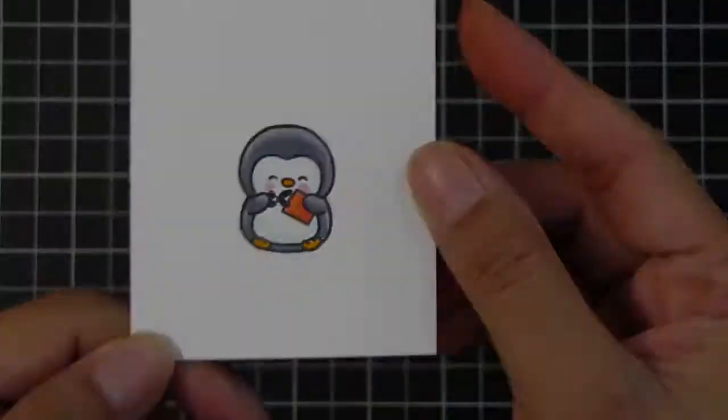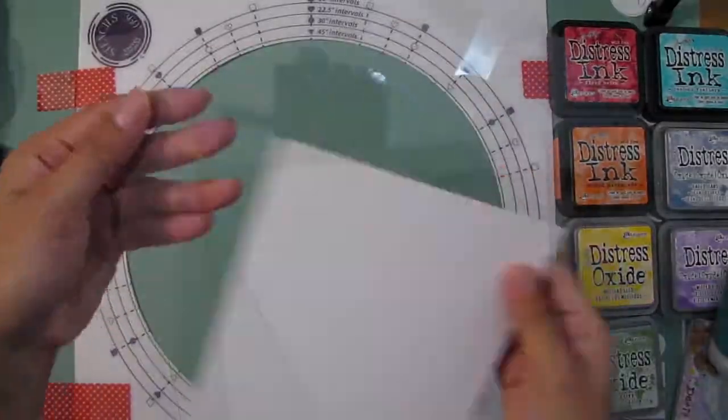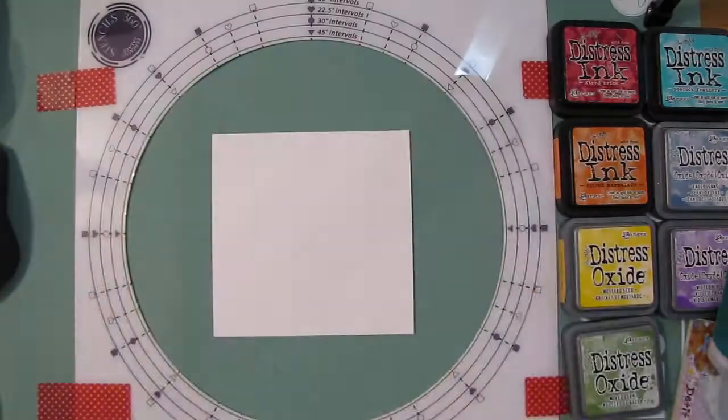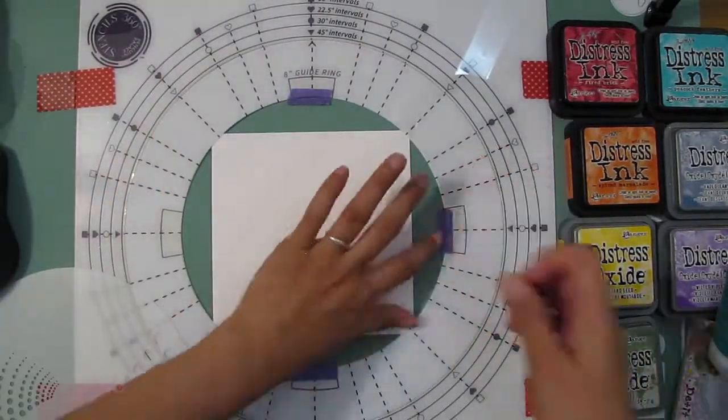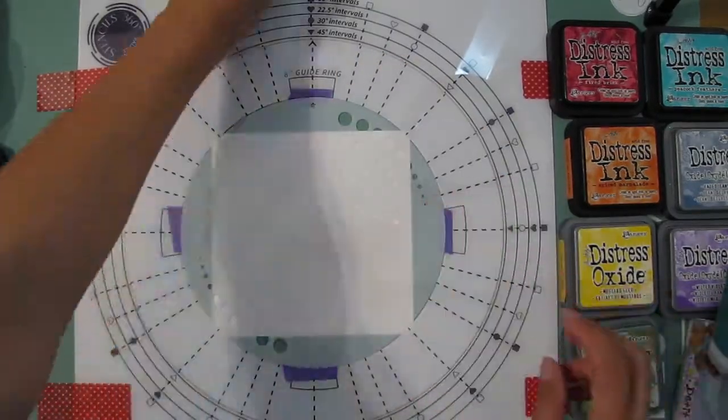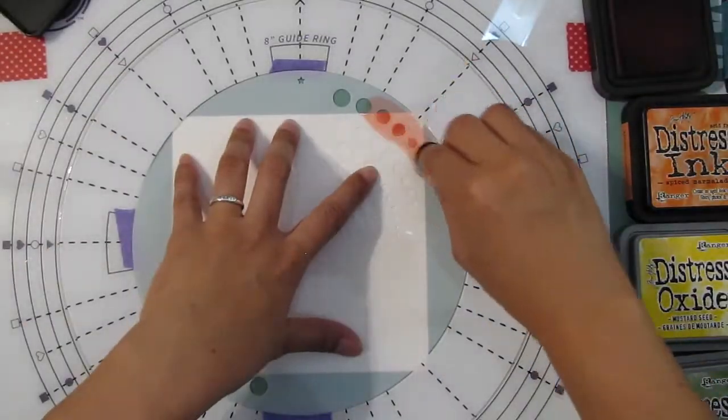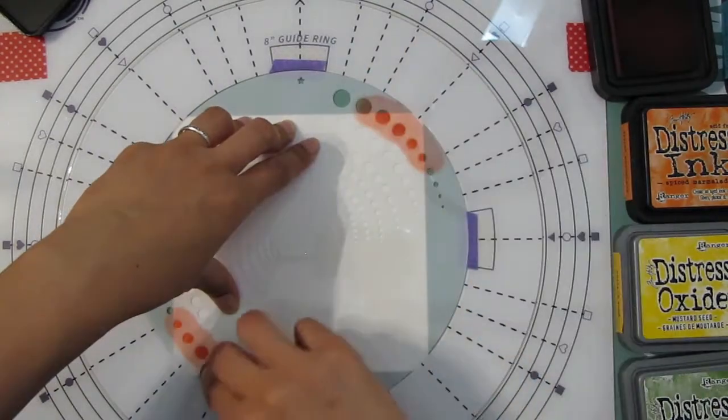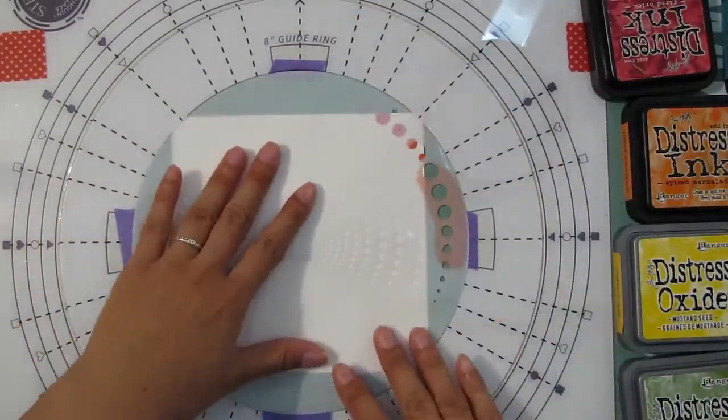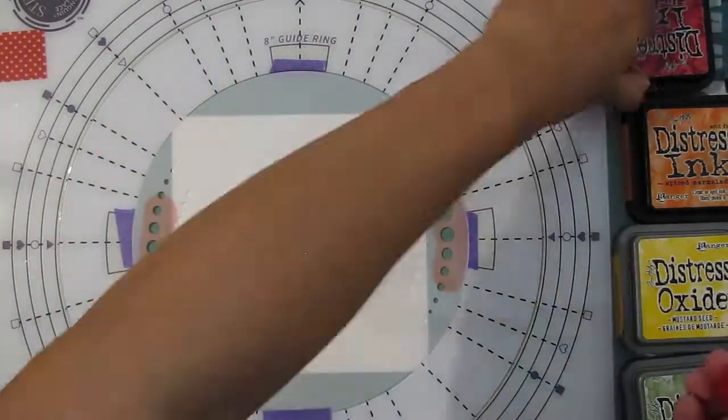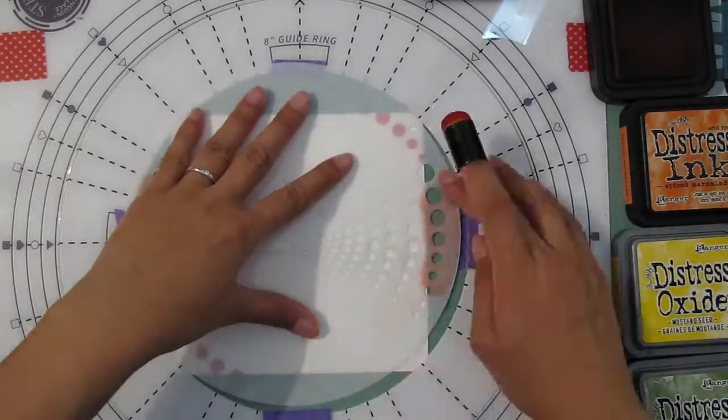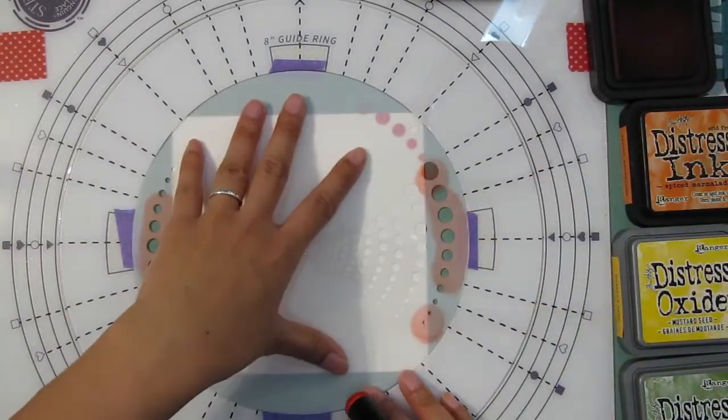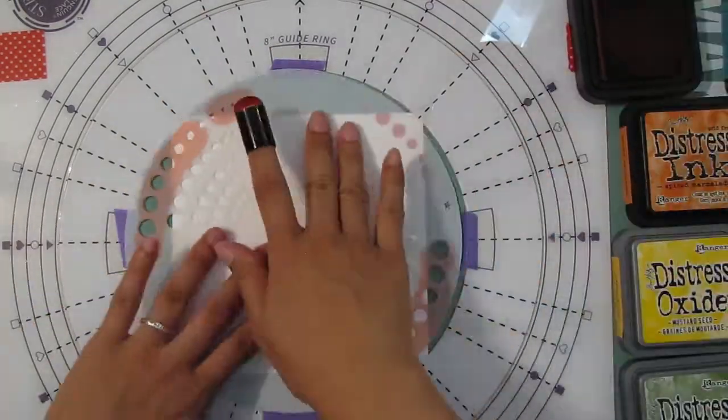Here I have my Stencils 360 already taped down to my workspace, which I keep taped down under my working mat. I inserted the 6-inch paper guide and laid down my 6x6 cardstock, took that paper guide out, and then inserted the 8-inch guide ring.